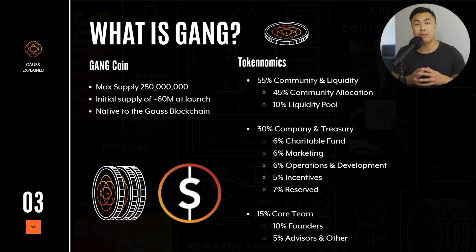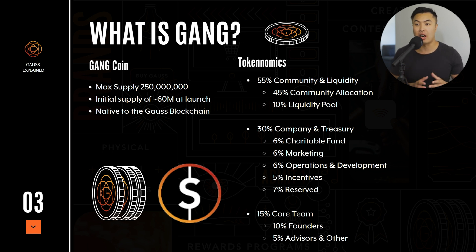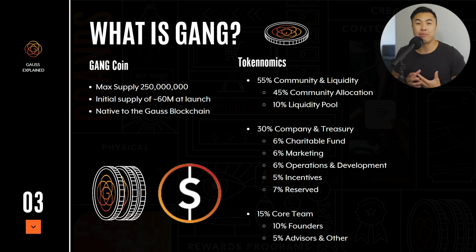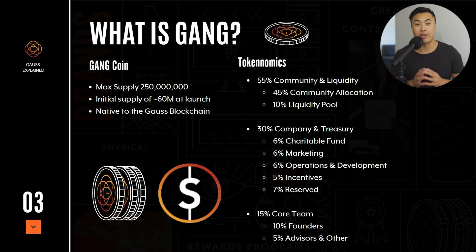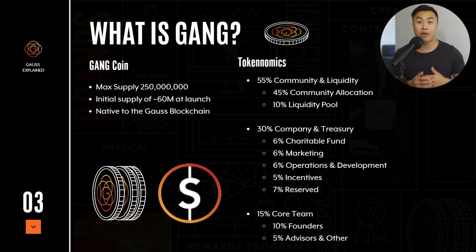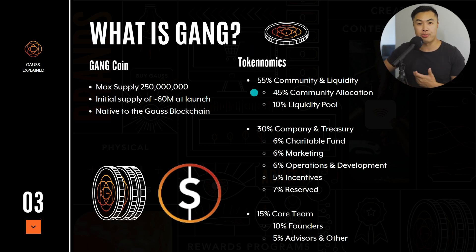The whole blockchain is going to be powered by the GANG token. This token has a maximum supply of 250 million and also an initial supply of 60 million at launch. The GANG token is like what Matic is to the Polygon network or what BNB is to the Binance network — the GANG token is the gas and the center of it all. You can buy and trade it, use it as gas, and there's also a benefit for people who are holding the tokens — you can actually earn a portion of the tax fees just by holding. If you look on the right section, you can see the tokenomics on how the token is being launched and distributed among the community.